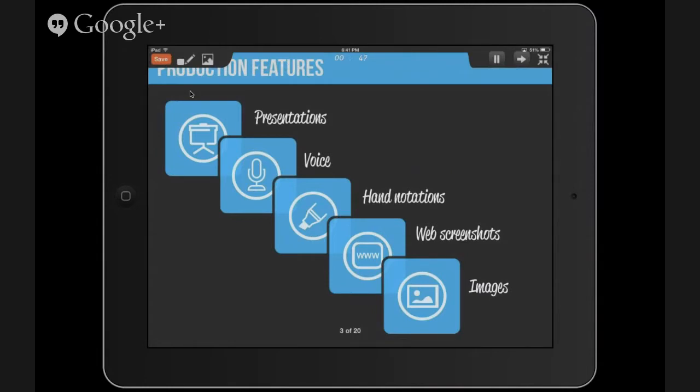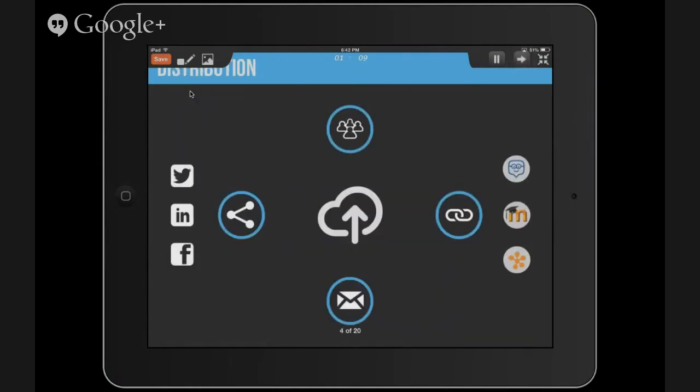You start by uploading any type of static file, which can be a PowerPoint or PDF presentation. For example, this can be a lesson plan or a typical textbook that you have. And then you let the app do the rest. So it will capture your voice, any hand annotations or highlights that you add. And you can also input web screenshots or additional images. Once you record it, it's saved on our server. And it's played back from any browser that supports HTML5. So it's super easy to share. The file size is one-tenth the size of video, so it uses a lot less bandwidth.